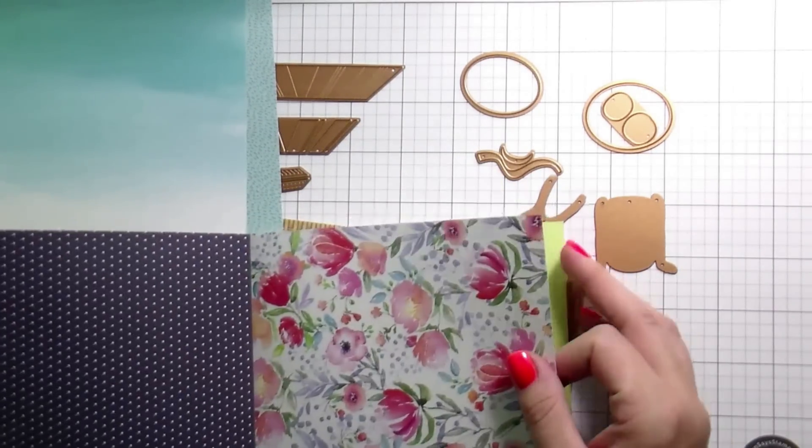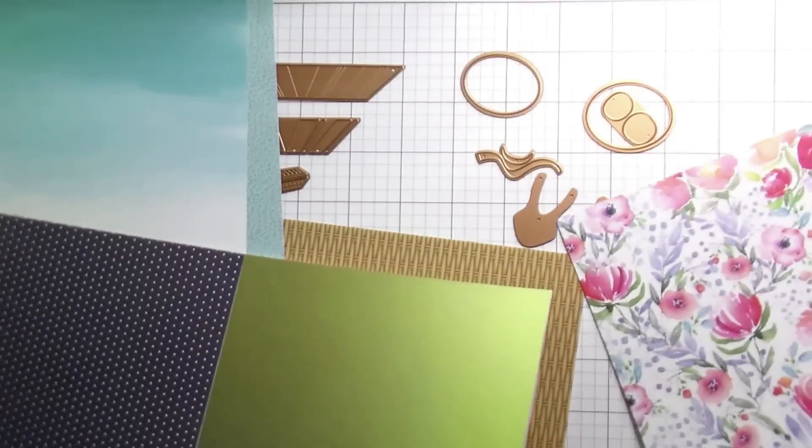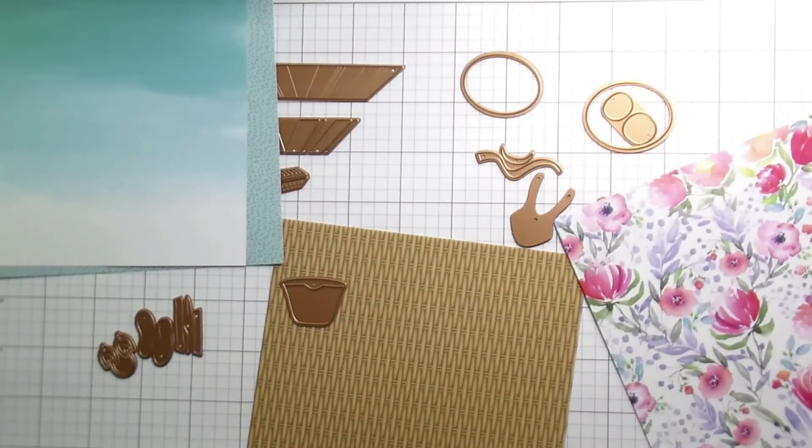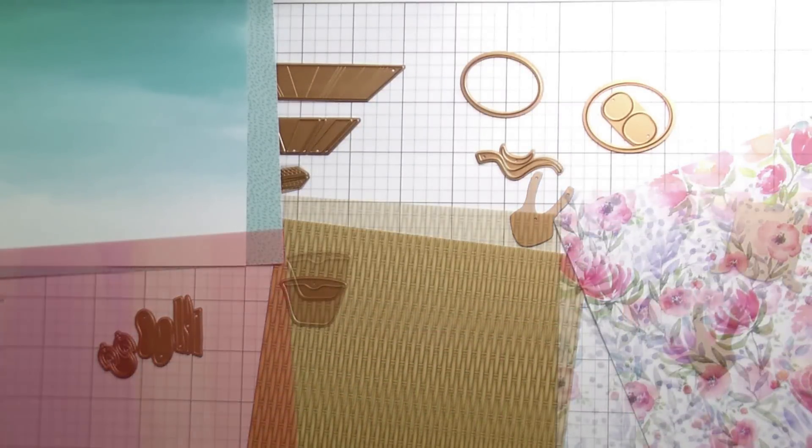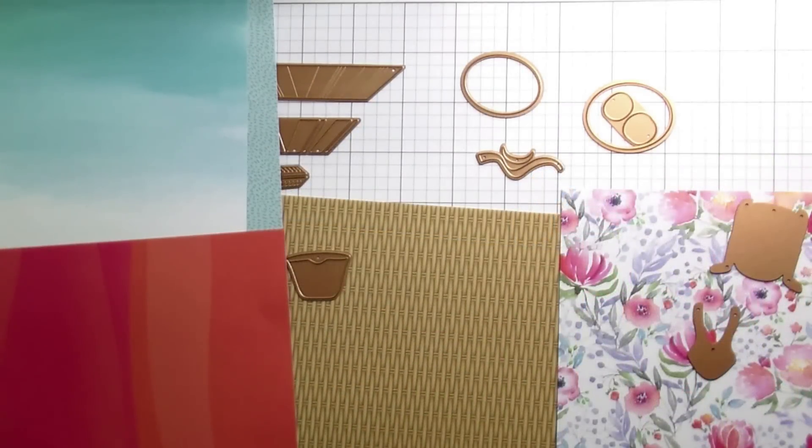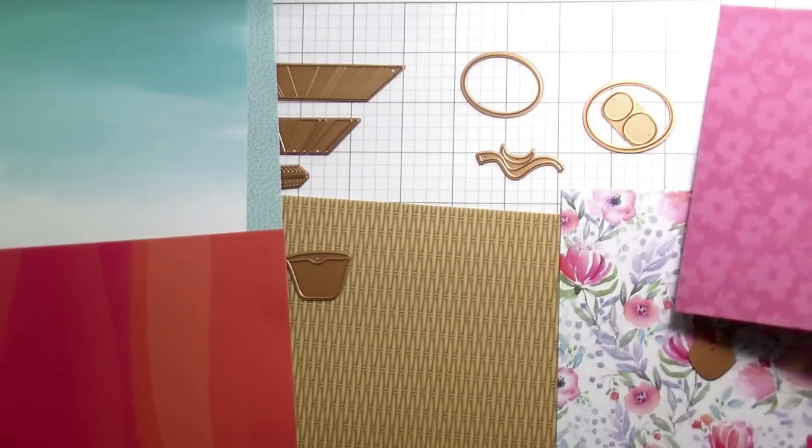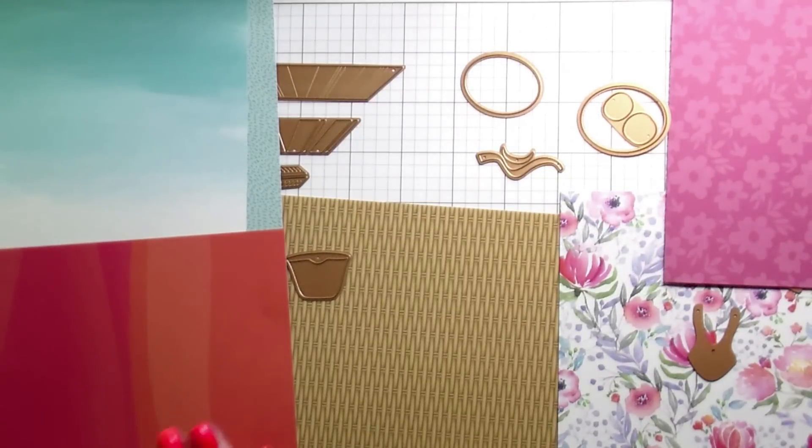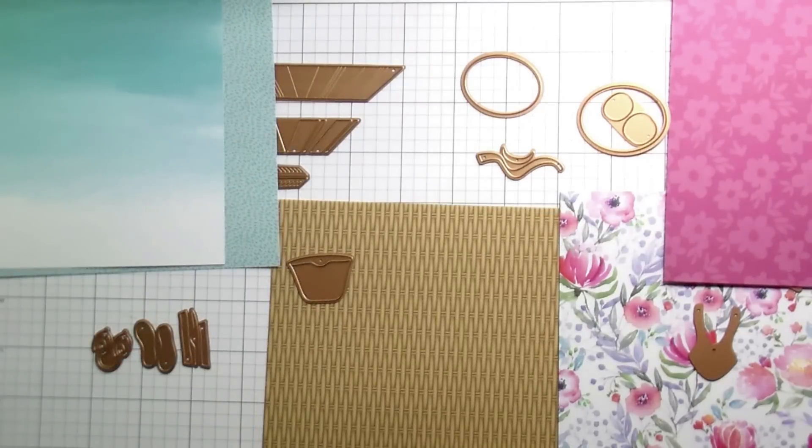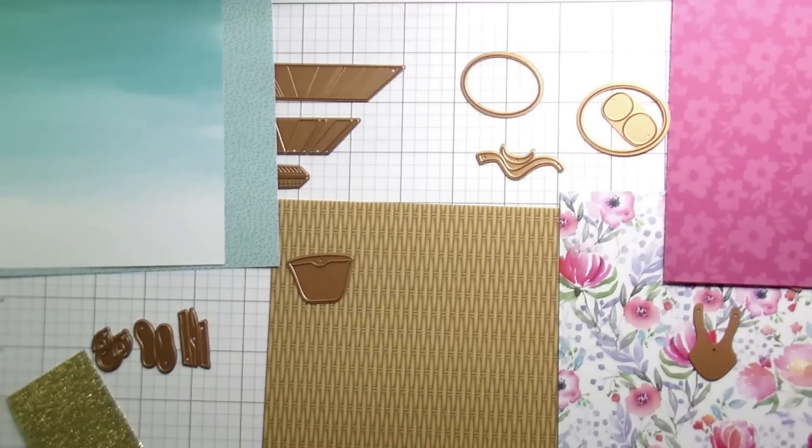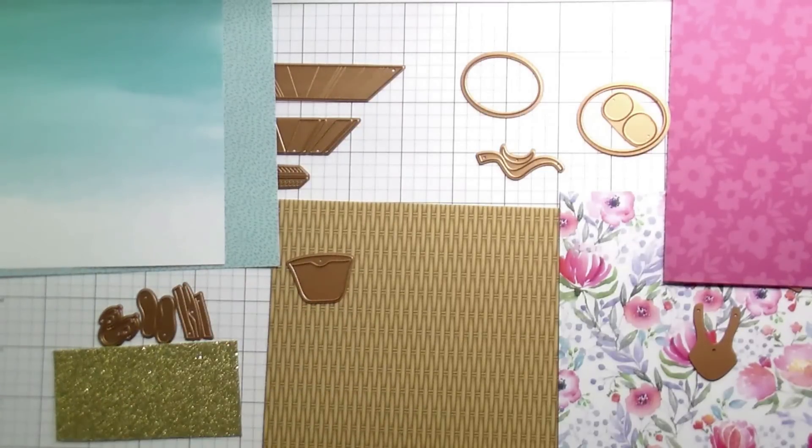But then there's also some details that you just can't get with markers or colored pencils like you can with a print. For example, that floral on the right I'm going to use for my bathing suit. How cute is that? I would totally wear that bathing suit. It's adorable. But I wouldn't be able to get that with me trying to color it in myself. I just wouldn't be able to get that level of detail on something so small.